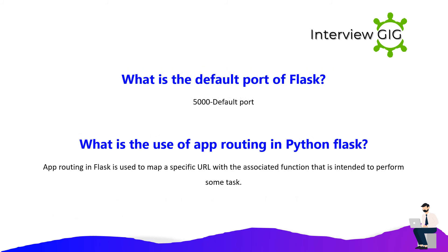What is the default port of Flask? The default port of Flask is 5000. What is the use of app routing in Python Flask? App routing in Flask is used to map a specific URL with the associated function that is intended to perform some task.